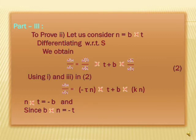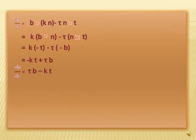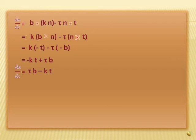Part three, to prove the second formula: consider n = b cross t. Differentiating with respect to s gives dn/ds = (db/ds) cross t + b cross (dt/ds). Using results 1 and 3, this becomes dn/ds = (−τn) cross t + b cross (κn) = −τ(n cross t) + κ(b cross n). Since n cross t = −b and b cross n = −t, we get dn/ds = −τ(−b) + κ(−t) = −κt + τb. Therefore dn/ds = τb − κt, and part three is also proved.